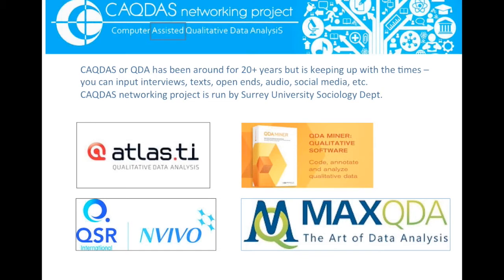In this chart I'd like to start by looking at the top. The acronym often used for this is CAQDAS, which stands for Computer Assisted Qualitative Data Analysis, though some people nowadays prefer to simply call it QDA. It's actually been around for quite a long time, but it is keeping up with the times. You can input all sorts of data now — not just transcripts of interviews, but all sorts of texts, open ends from surveys, audio, YouTube, social media, and all of that sort of stuff.